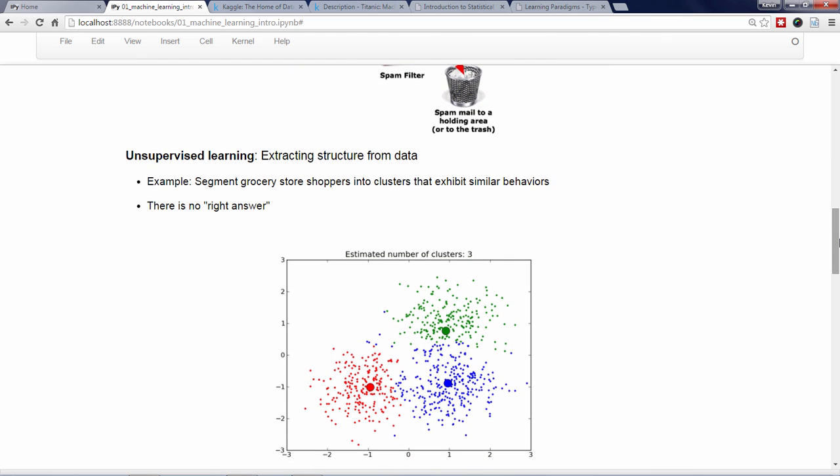In contrast, unsupervised learning is the process of extracting structure from data or learning how to best represent data. For example, if my dataset was the characteristics and purchasing behavior of shoppers at a grocery store, my unsupervised learning task might be to segment the shoppers into groups or clusters that exhibit similar behaviors.